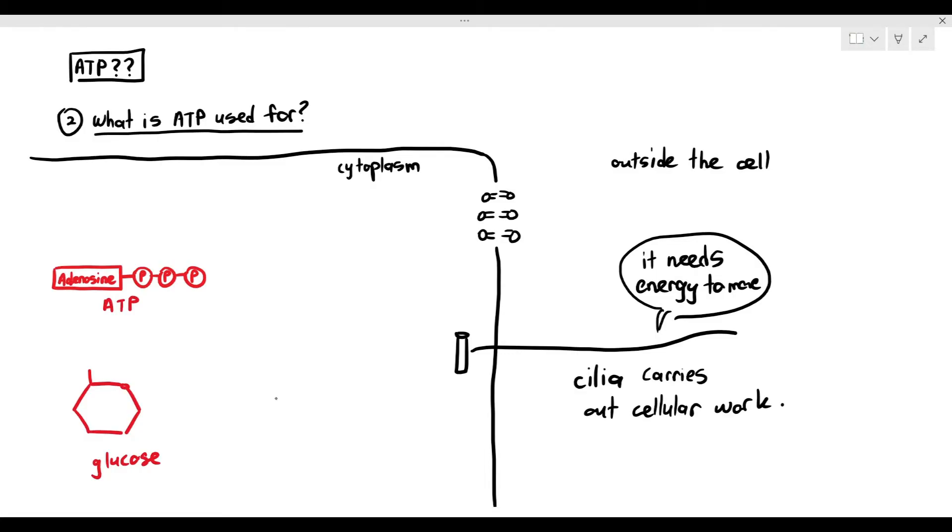So my favorite question to ask my students is, which molecule provides energy to the cilia? Is it ATP that provides energy to the cilia, or is it glucose that provides energy to the cilia? Based on my experience, 50% of students will say ATP provides the energy. But some of my students will then say glucose is the one that provides the energy to the cilia.